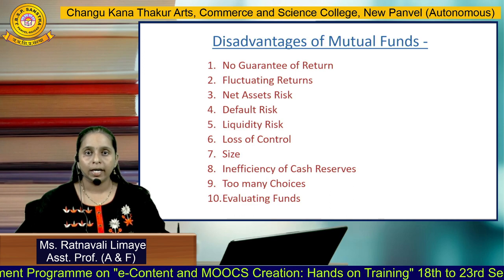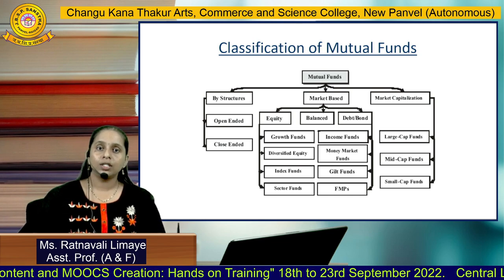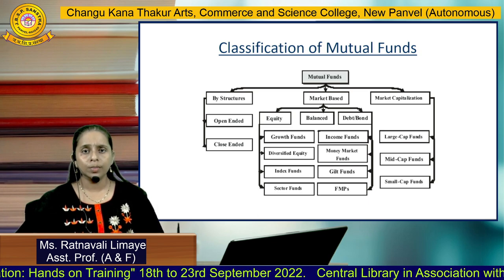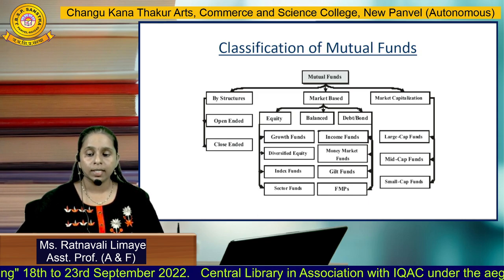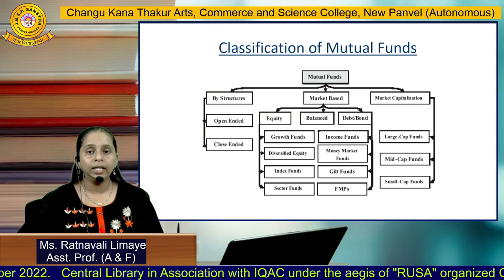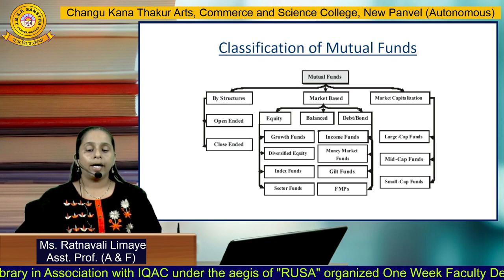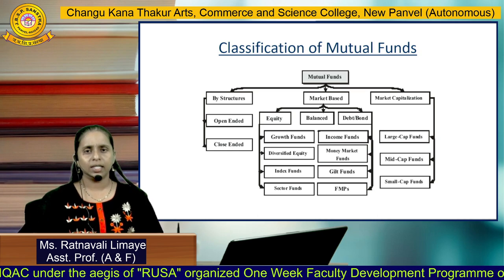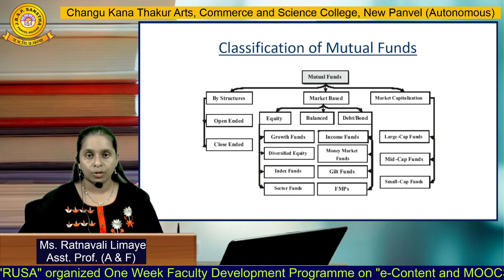However, compared to the advantages, there are very few disadvantages. Now let us look at the classification of mutual funds on different bases. On the basis of organizing structure, there are open-ended schemes and close-ended schemes. On the basis of market, there are equity funds, balanced funds, and debt or bond funds. On the basis of market capitalization, there are large-cap, mid-cap, or small-cap funds. In an open-ended scheme, as the name suggests, we can invest and withdraw any time. Close-ended schemes are open for a particular time period within which investors can invest.